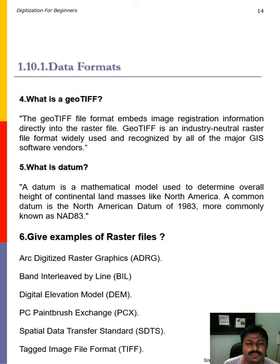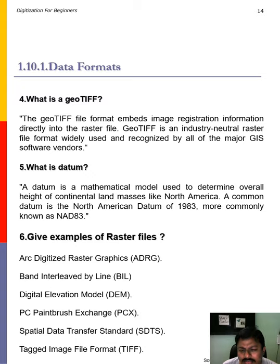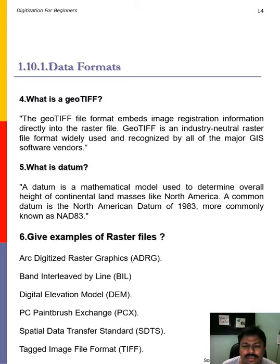GeoTIFF is a type of raster file — all gridfiles are raster files. GeoTIFF already has the geo-referenced information embedded, meaning latitude, longitude, and elevation of the feature are already stored within the file itself. When a file already contains this geo-referenced information, it is known as a GeoTIFF file.